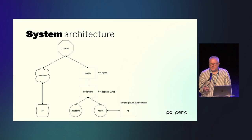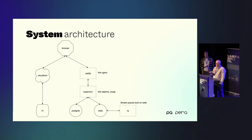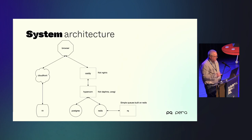For a queuing system we use a thing called RQ. If you need a queuing system I really recommend RQ — it's built on top of Redis, it's really simple, the code is quite small, and you can understand and debug what's going on when your queuing system stops working. The static assets are served on CloudFront from S3.